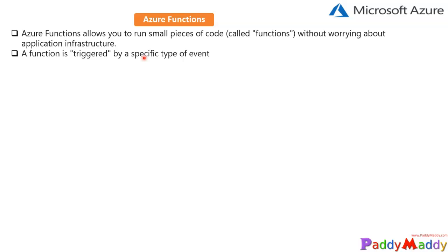Functions are basically triggered by specifying a type of event, which supports different types of triggers. When we talk about triggers, it can be an HTTP trigger — some kind of code and HTTP request — or a timer trigger by scheduling some kind of code to run, or Azure Cosmos DB processing, or Blob Storage processing, or Queue Storage, or Event Grid which responds to Event Grid events with subscriptions and filters.